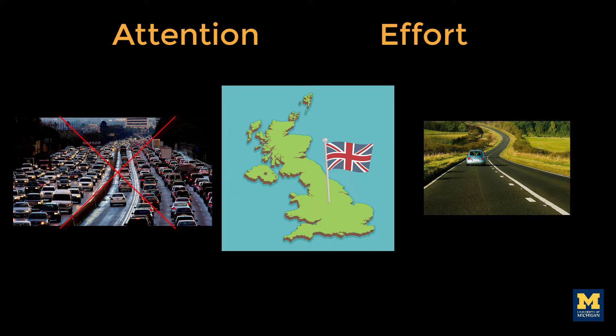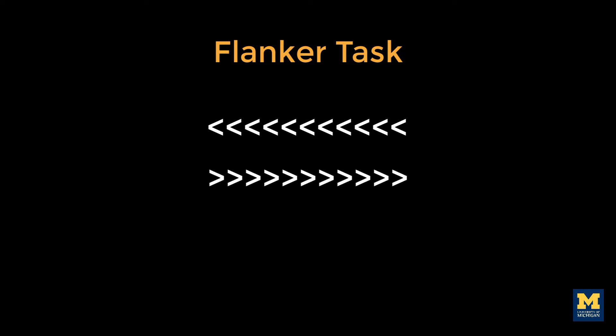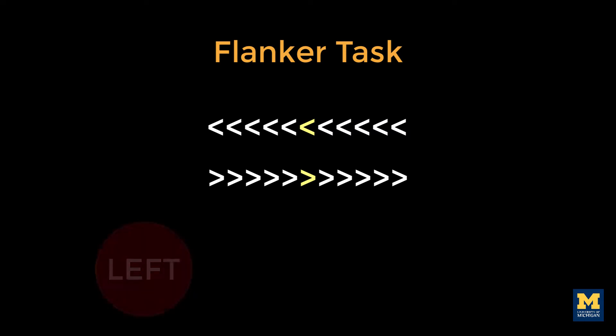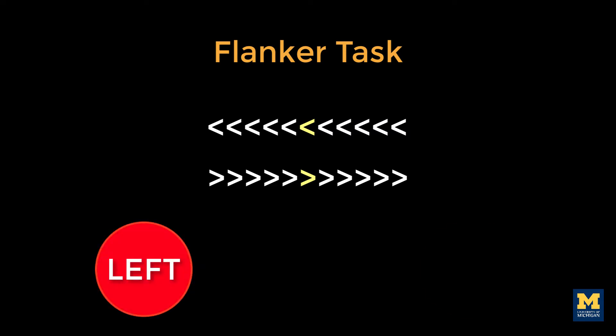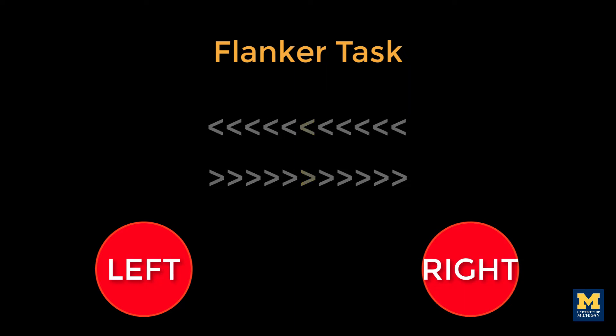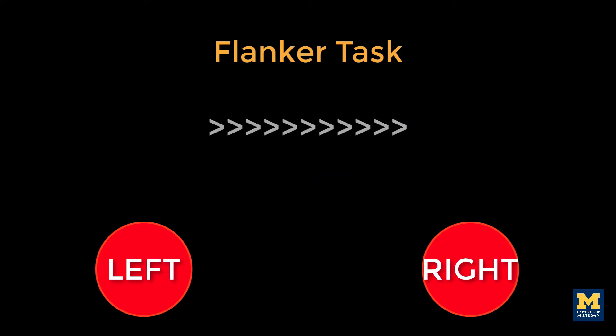So how can we elicit a similar cognitive state in the laboratory? One popular experiment is called the Flanker task. In the Flanker task, the subject sees a line of arrows pointing either to the left or to the right, and is then instructed to press a button indicating the direction of the arrow in the middle. If the middle arrow is pointing to the left, they press the left button; if it's pointing to the right, they press the right button. The middle arrow is flanked by other arrows — hence the name, Flanker task.